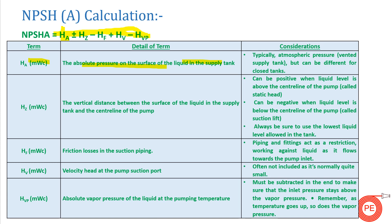HA varies from tank to tank. If we have a tank under vacuum, HA will be zero; if the tank is exposed to atmosphere, HA will be one atmosphere. So HA stands for the value of atmospheric pressure being exerted on the surface of the liquid in the tank.